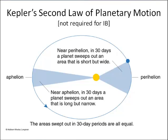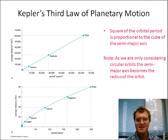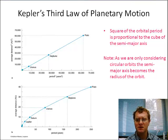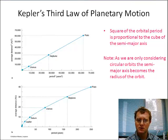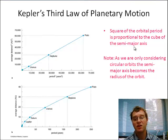The third rule is the important one, because this is what the IB cares about. Kepler's third law of planetary motion says that the square of the orbital period is proportional to the cube of the semi-major axis. When we're talking about circular motion, the semi-major axis just means it's the radius of the orbit.